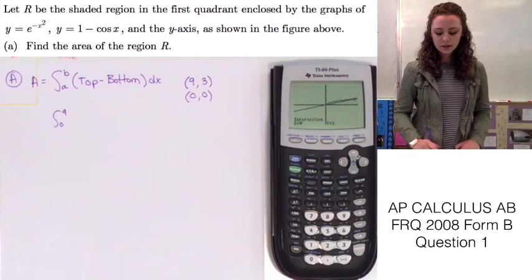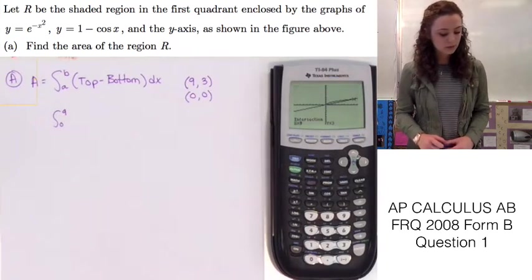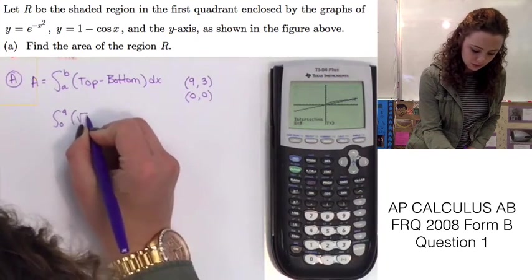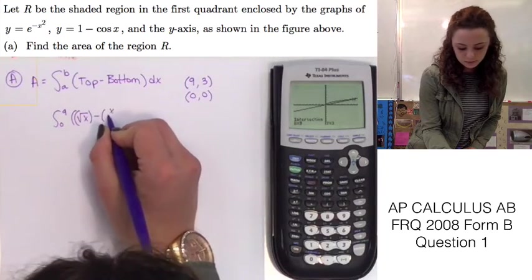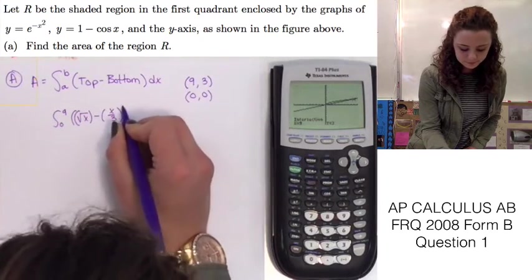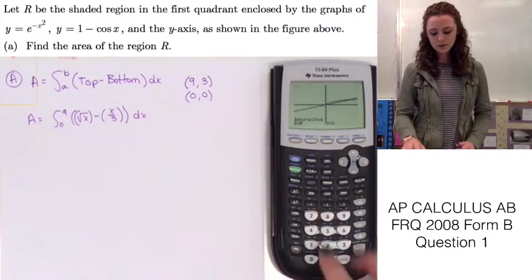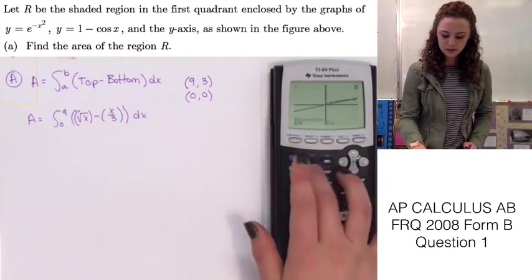Now let's look and see what our top function is. We can tell that it is Y1, so that's the square root of X. The top function is square root of X minus the bottom function, which is going to be X over 3. If we just plug this into our calculator using the math function, we can get the answer.